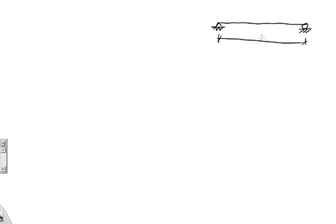Let's take a look. First, let's go ahead and quickly draw the beam. If I have a hinge on the left and a roller on the right, and the beam has a total length of L, if I divide it into two parts L over 2, at this point I'm going to have a counterclockwise moment M. Support A is on the left and support B is on the right. I'm asked to draw the shear force and bending moment diagram for this beam.